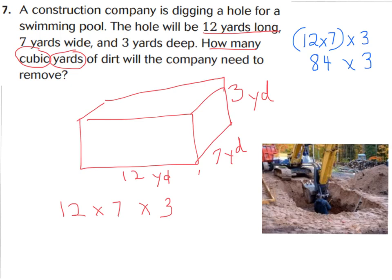When I went ahead and set this up, I decided to group together for my base, 12 times 7, and then I'll multiply that by the height. I know 12 times 7 is 84, and I was able to do that mentally because I know with my distributive property, 7 times 10 is 70, and 7 times 2 is 14. And we know 70 plus 14 is 84.